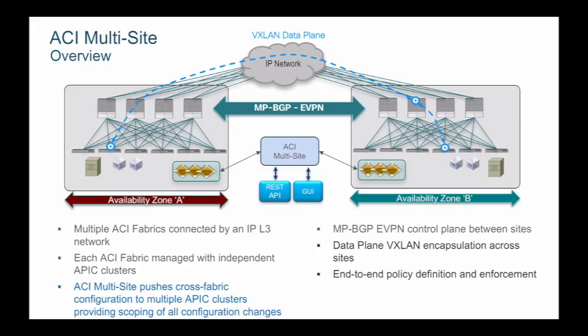ACI multisite provides a single point of management for managing tenant policies extended across multiple sites. ACI multisite pushes cross-fabric configuration to multiple APIC clusters and provides scoping of all configuration changes by controlling which tenant policies are extended and to which sites. Both ACI multipod and ACI multisite provide layer 2 and layer 3 extension across multiple locations with consistent policy. Multipod is commonly deployed as a single availability zone with operational simplicity, while multisite is commonly deployed as multiple availability zones with control over what policies are deployed and to where.